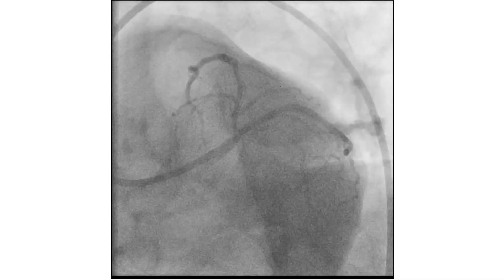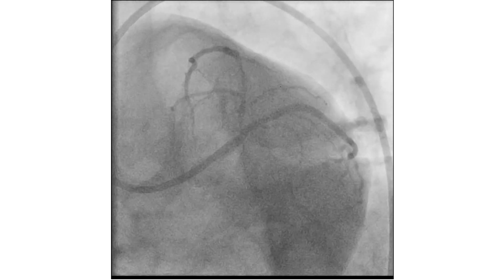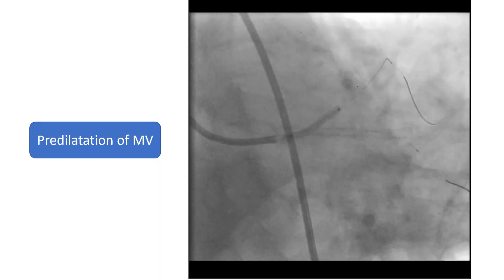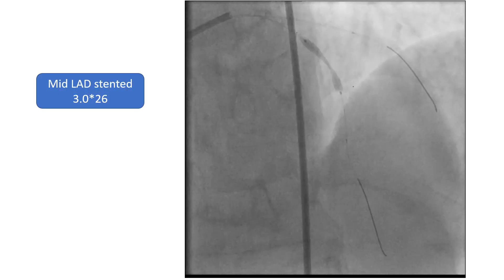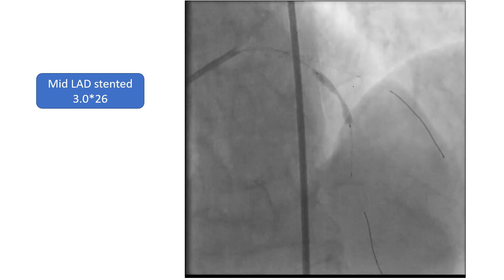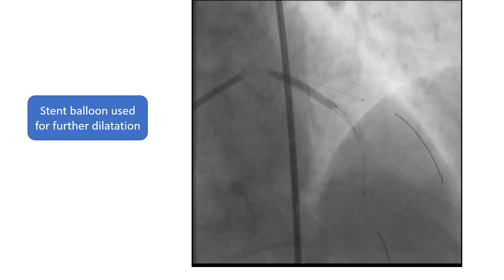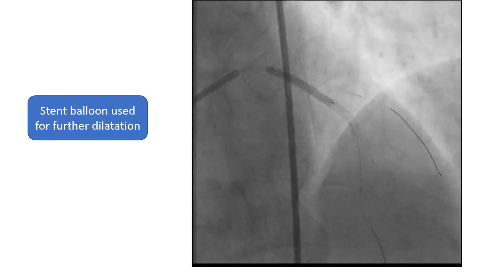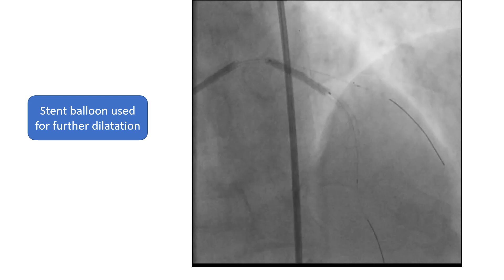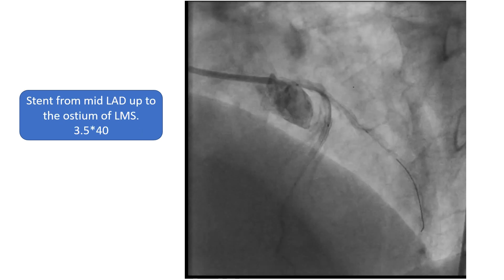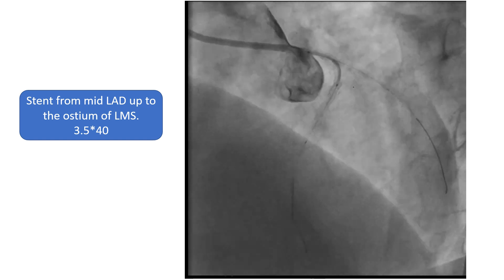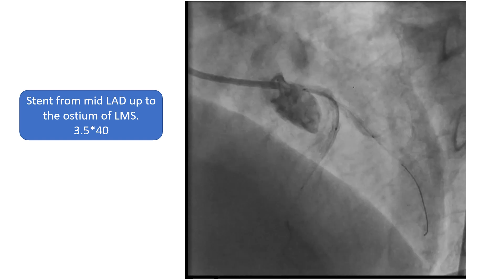This is the spider view, which shows the same findings. Pre-dilatation of the LAD and left main stem was needed. A stent was deployed at the mid-LAD. The stent balloon was pulled back and inflated proximally for further dilatation of the ostium of the LAD. Then a stent was chosen to cover the LAD all the way back to the ostium of the left main stem — it was 3.5 by 40 mm.